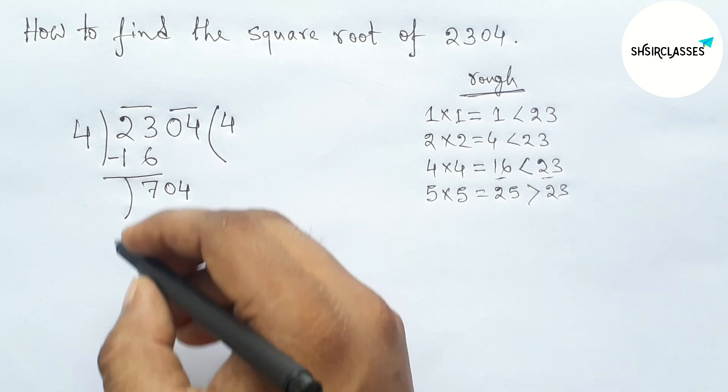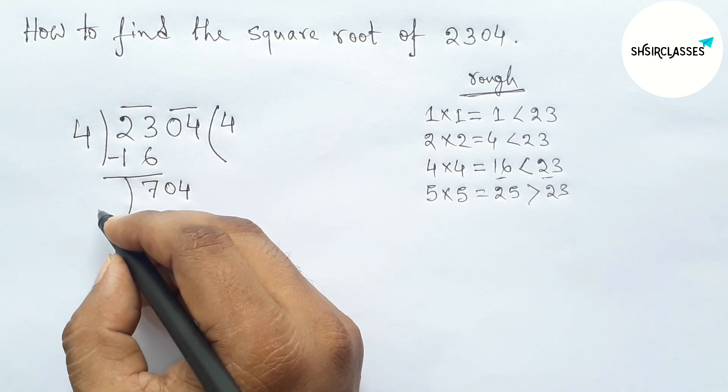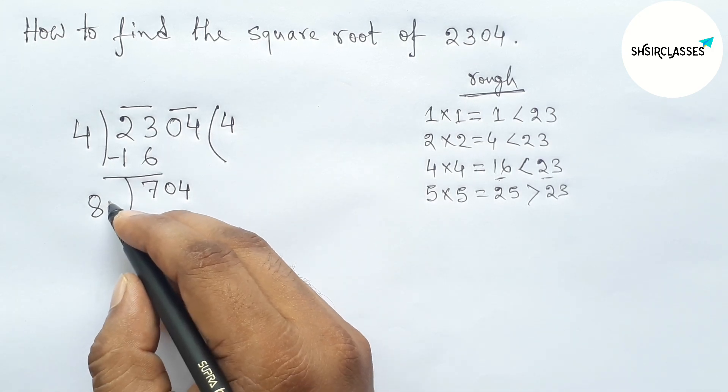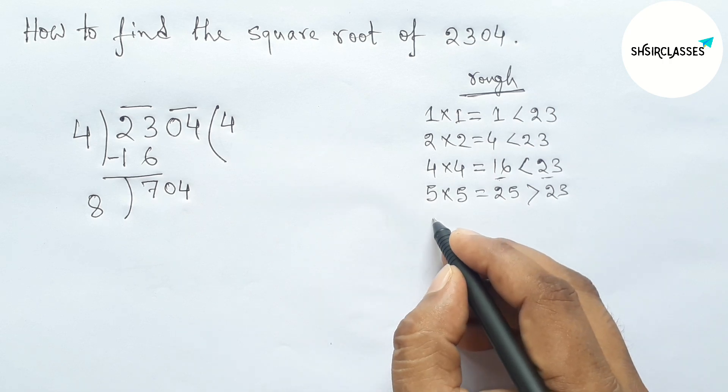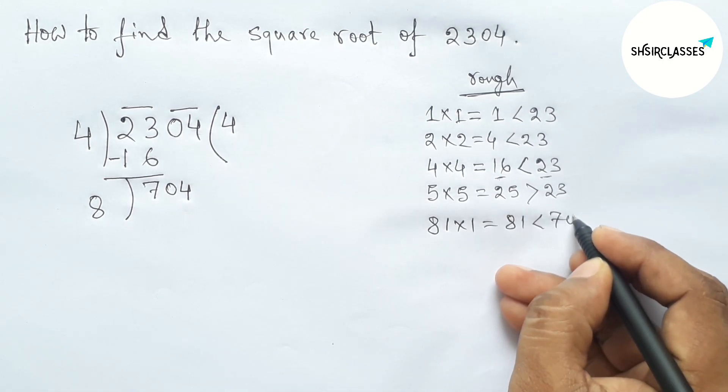And write down here the second pair of numbers and drawing a division line. Next, taking the double of 4, so double of 4 equals 8, so here 8. Next, choose a number beside 8 and multiplying by that number which is equal or less than 704.